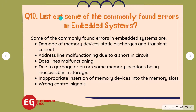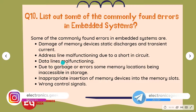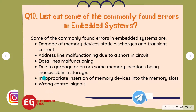Question 10: List out some of the commonly found errors in embedded systems. Answer: Some commonly found errors in embedded systems are: damage of memory devices, static discharges, and transient current; address line malfunctioning due to a short in-circuit; data lines malfunctioning; due to garbage or errors, some memory locations being inaccessible in storage; inappropriate insertion of memory devices into memory slots; and wrong control signals.